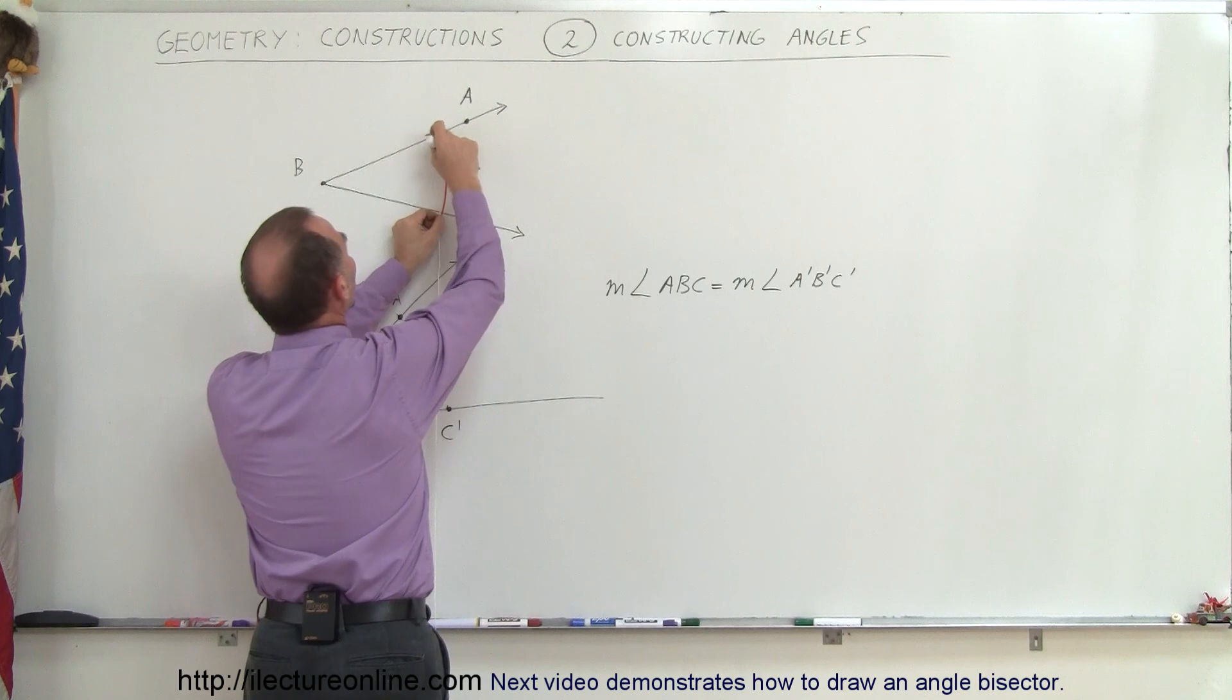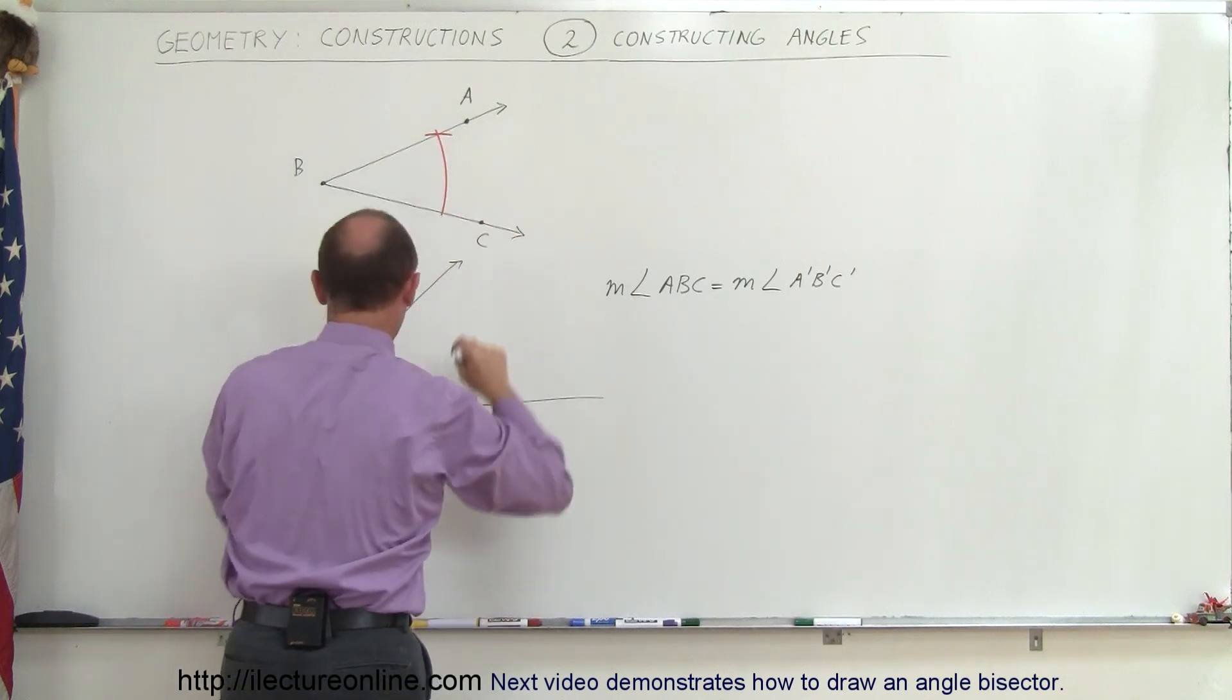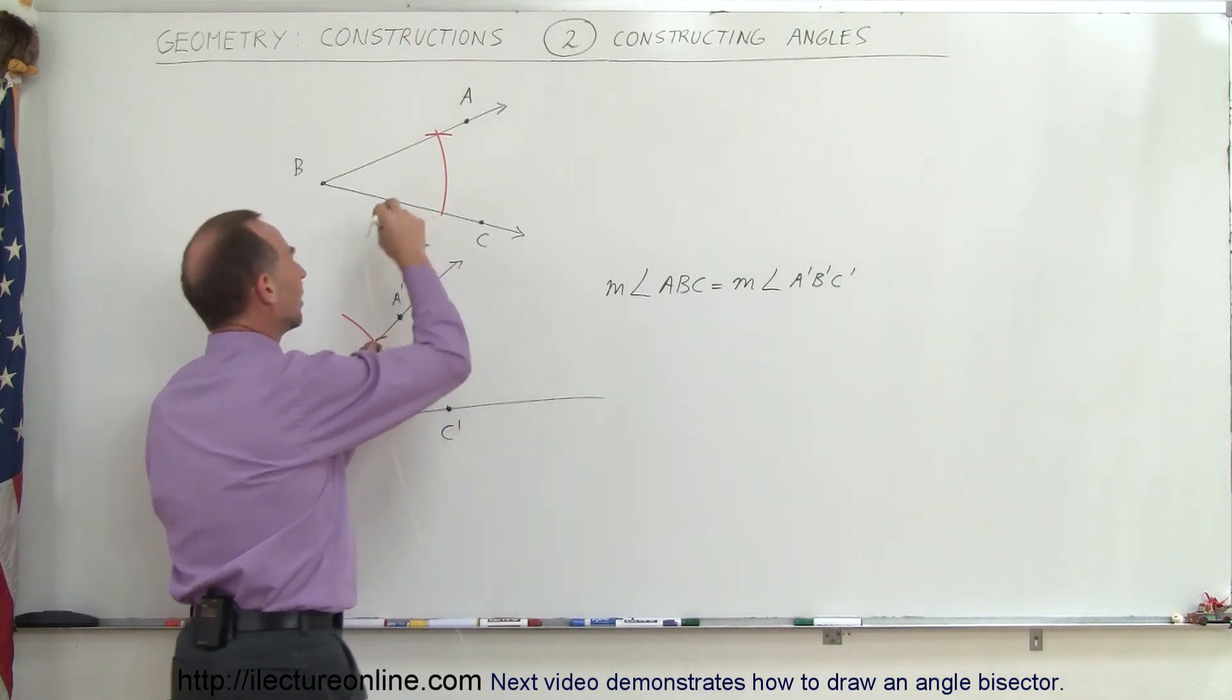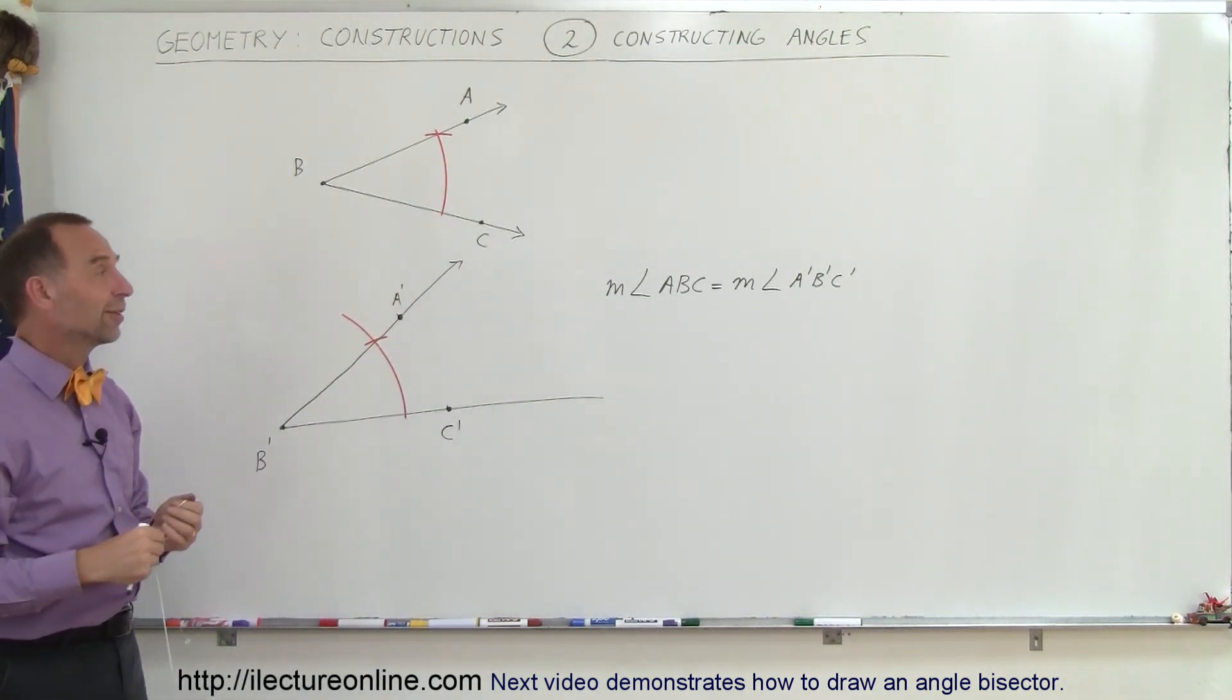Where those two cross, that must be right on the line there. Then you come here, do the same thing. Where the two cross, that's where you draw a line through. There you have two congruent angles, and that's how it's done.